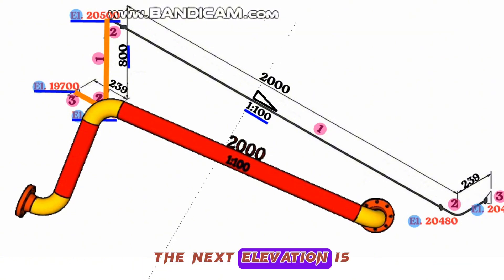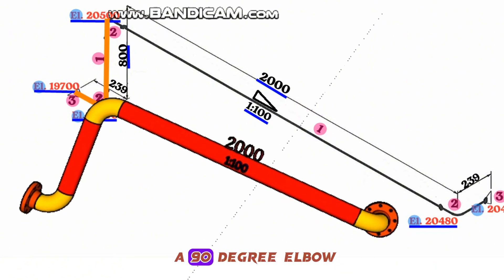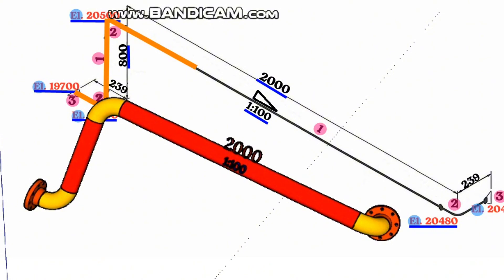The next elevation is 20,480 millimeters. The pipeline starting at 20,500 height elevation turns southwards with a 90-degree elbow and continues for a length of 2,000 millimeters. In this section of the pipeline, the fall slope symbol is shown.